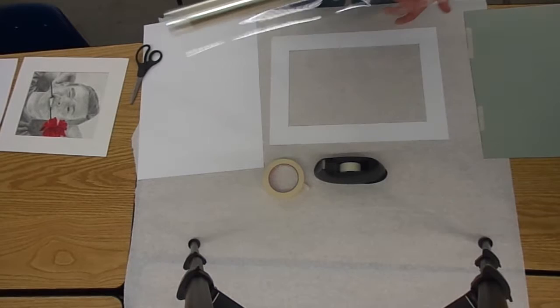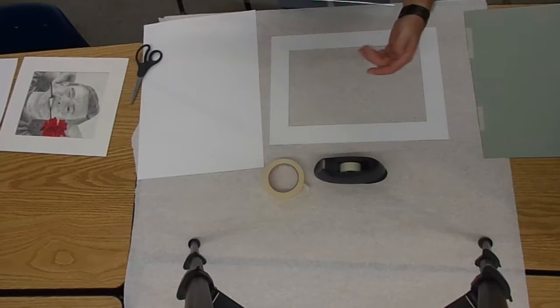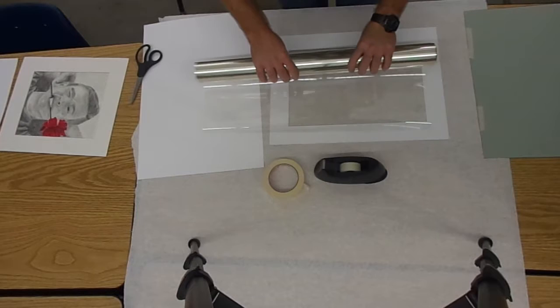I'm going to take the clear acetate. Now, acetate, it is very static-y. So one of the things is we want to make sure that the table is clear of any eraser trash, as I like to call it. The little stuff that comes off an eraser as you're erasing, that stuff will get all over this clear acetate.